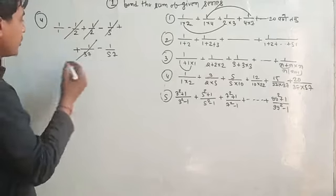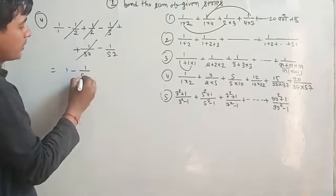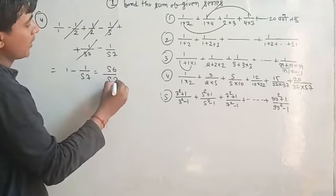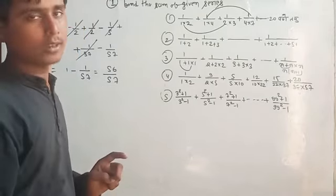The term you have is 1 upon 1 minus 1 upon 57. The term you have is 56 upon 57. What is the answer? Okay?